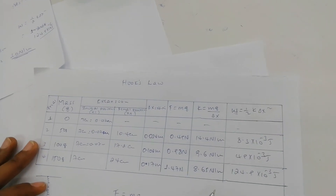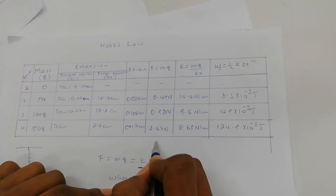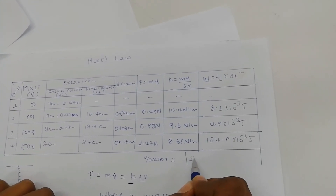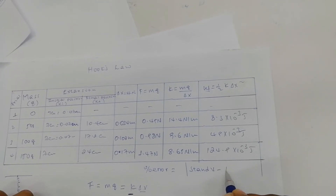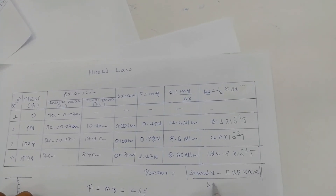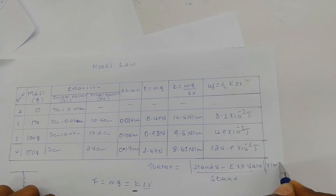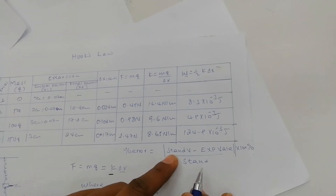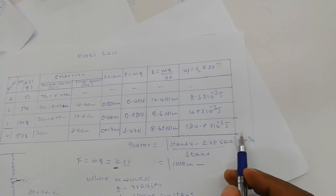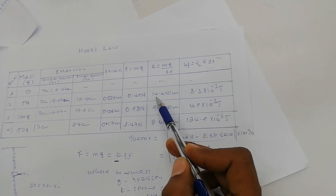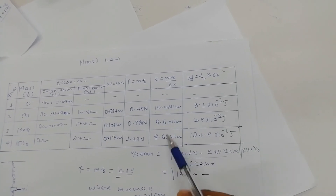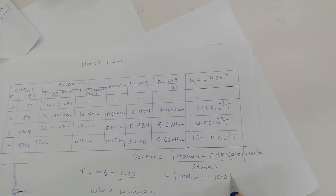Finally, we can find the percentage of error. The percentage of error is given by the absolute value of the standard value minus the experimental value, divided by the standard value, times 100%. The standard value is 10 newtons per meter. The experimental value is the average: 40.4 plus 9.6 plus 8.65 divided by 3, which gives around 10.8 newtons per meter. Then we subtract and divide by 10, and multiply by 100. The percentage of error is around 8%.